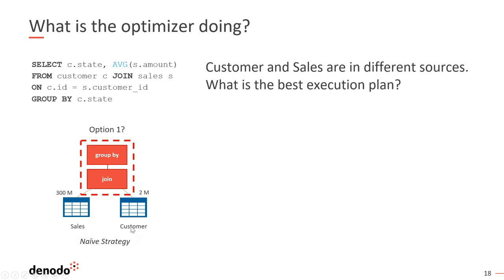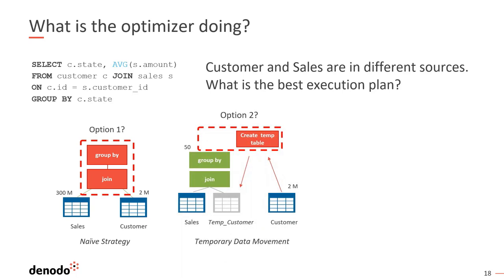In the naive strategy, the sales table is in one data store and the customer table is in another. Denodo would first query the sales database, pull all 300 million rows back, then query the customer table and bring back 2 million rows, do the join, do the aggregation, and return the dataset. The challenge is that because we're dealing with an aggregation, we can't even start streaming data to the end user until all 300 million rows have been returned to Denodo. So for the bulk of this query, we're basically just waiting for data to come back from the sales database.